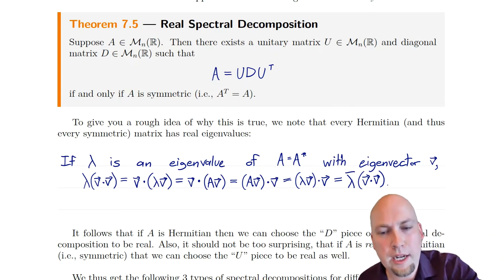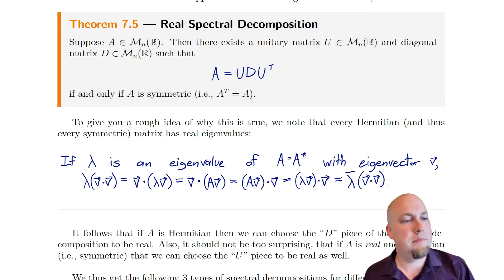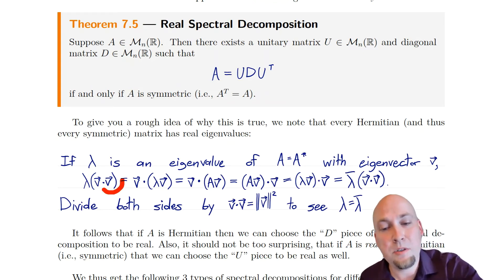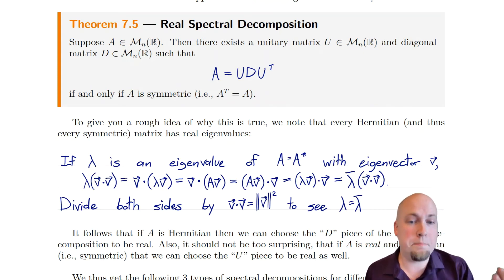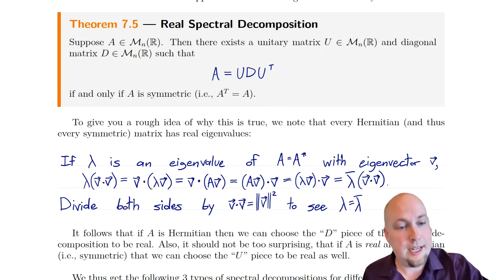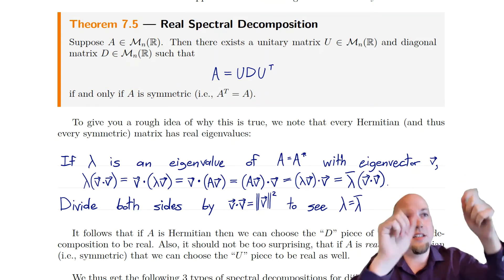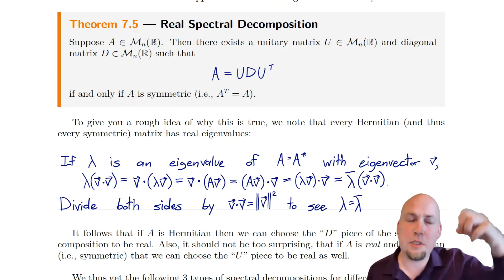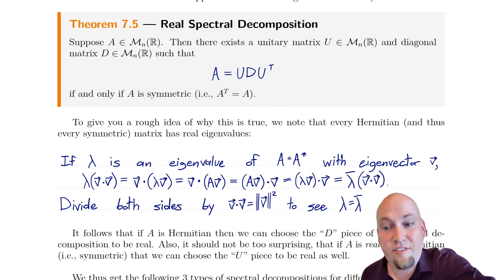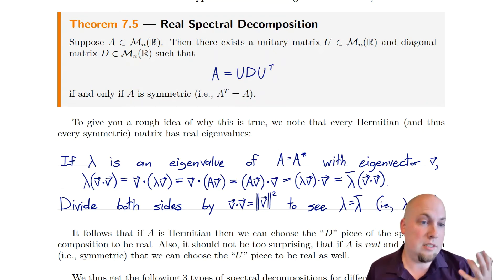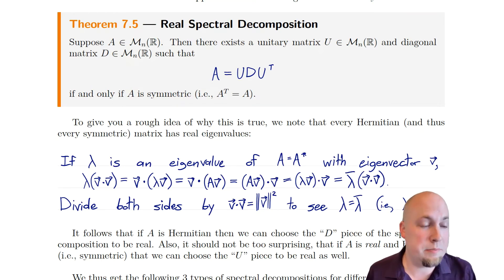Tracing through what we have: lambda times V·V equals lambda bar times V·V. Because V is an eigenvector it's a non-zero vector, so V·V is non-zero — it equals the norm squared of a non-zero vector. Dividing both sides by V·V gives lambda equals lambda bar. The only way a number equals its own complex conjugate is if it's real. So all eigenvalues of every Hermitian matrix, and therefore of every real symmetric matrix, are real.